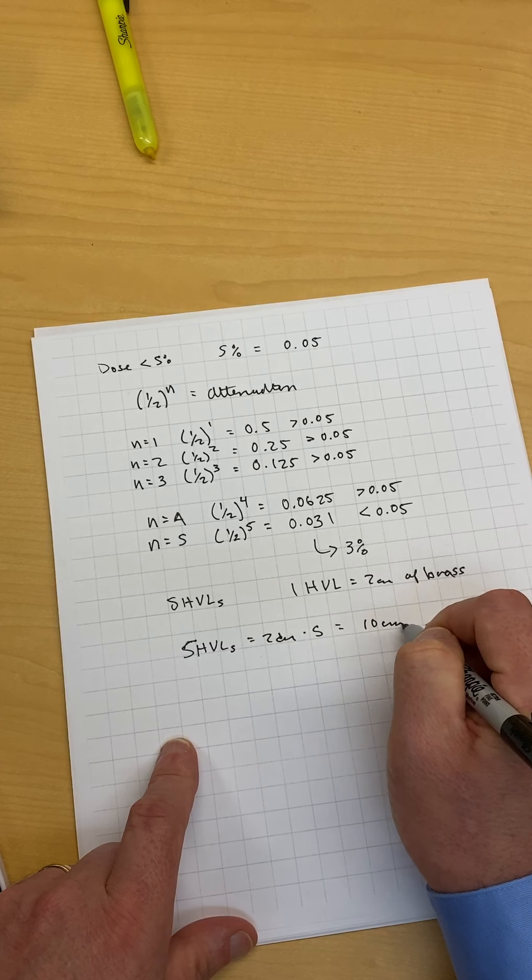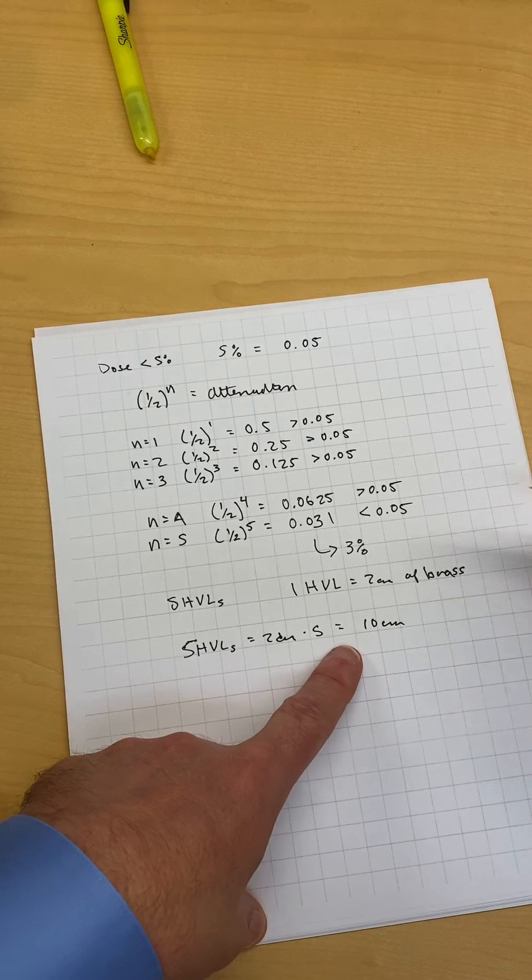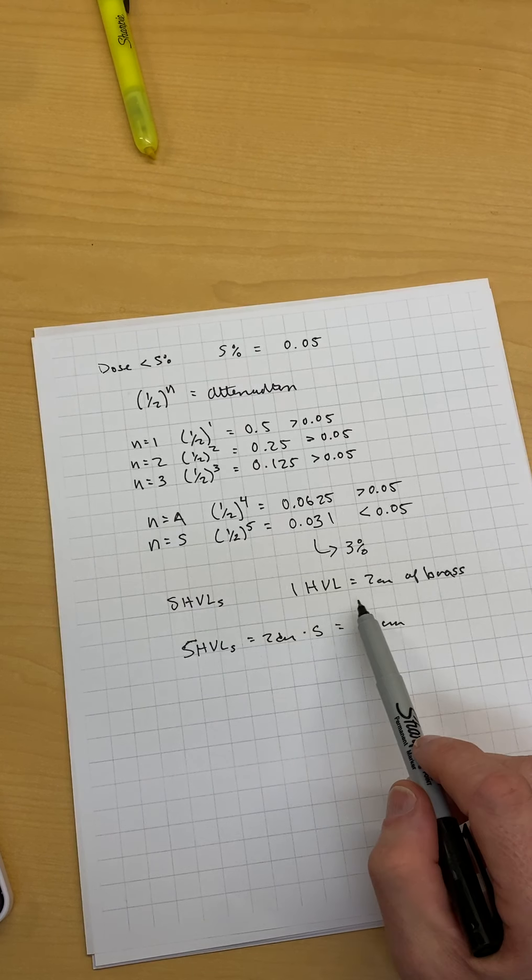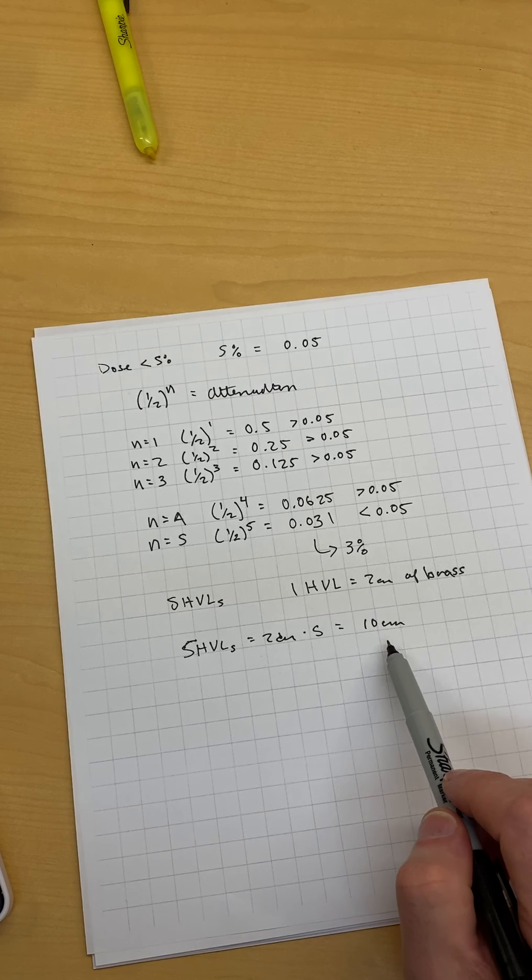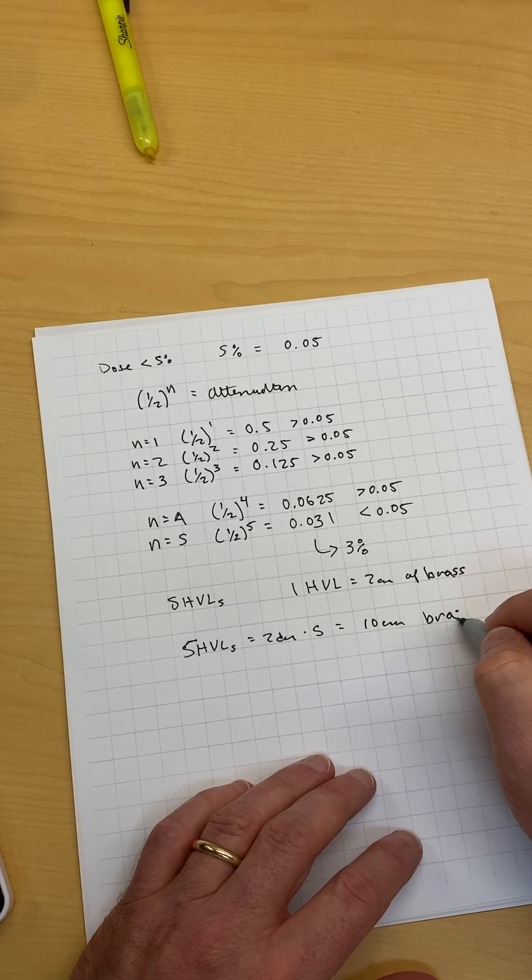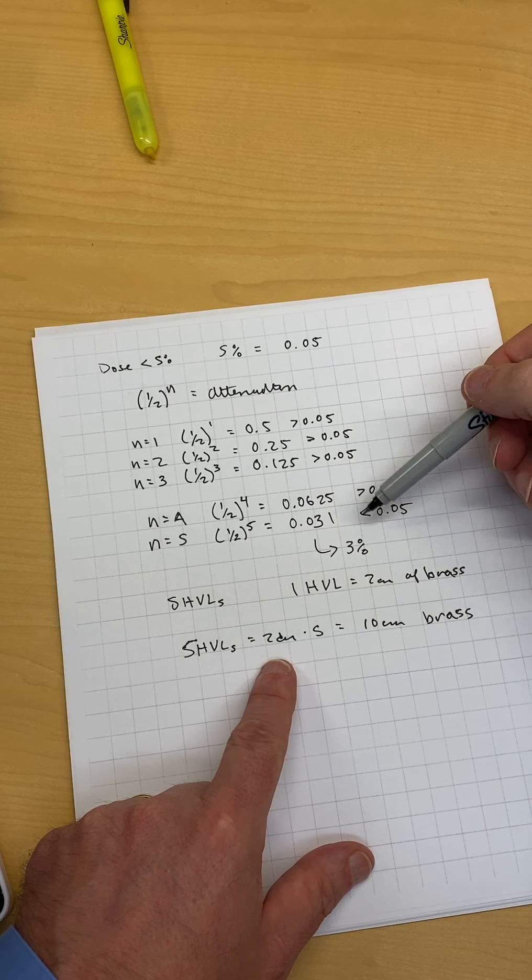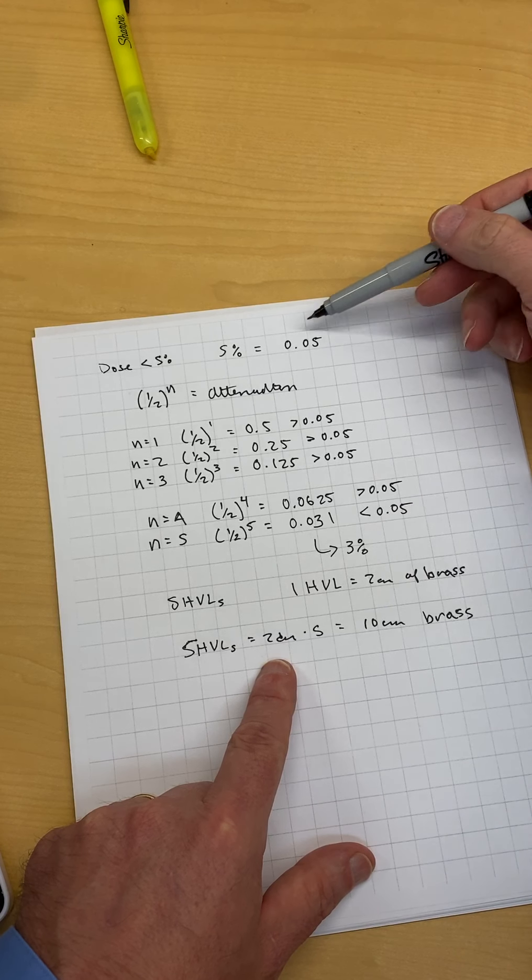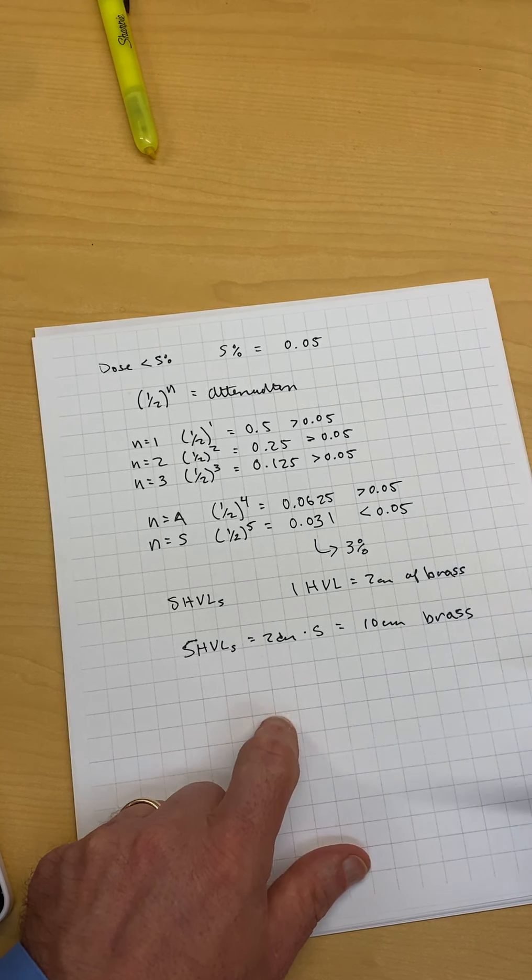So if we want five half value layers and one half value layer is two centimeters of brass, we need ten centimeters of brass to attenuate the beam. It'll take it down to three percent of its original value, which is less than five percent that the physician wanted.